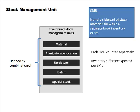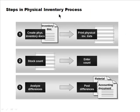The basic steps in the physical inventory process: you won't count products for the entire company at the same time. You'll do it periodically — some items now, some items later — in a systematic way. The first step is creating what are called physical inventory documents, which you can think of as a sheet of paper listing which stock management units need to be counted based on your schedule.